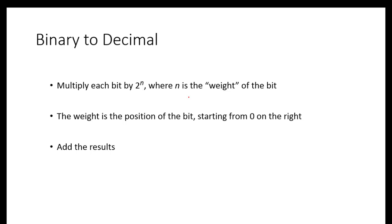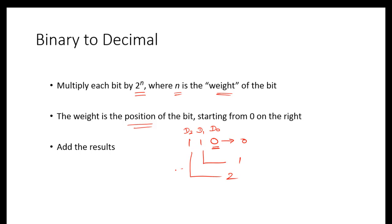We have only 3 steps to do it. What we are going to do is multiply each bit by 2 power n, where n is the weight of the bit. The weight of the bit means the position of the bit. If you have 3 bits, the weight is the position of the bit — d0, d1, and d2 — with weights 0, 1, and 2 respectively. We are going to add every bit after multiplying by 2 power n.